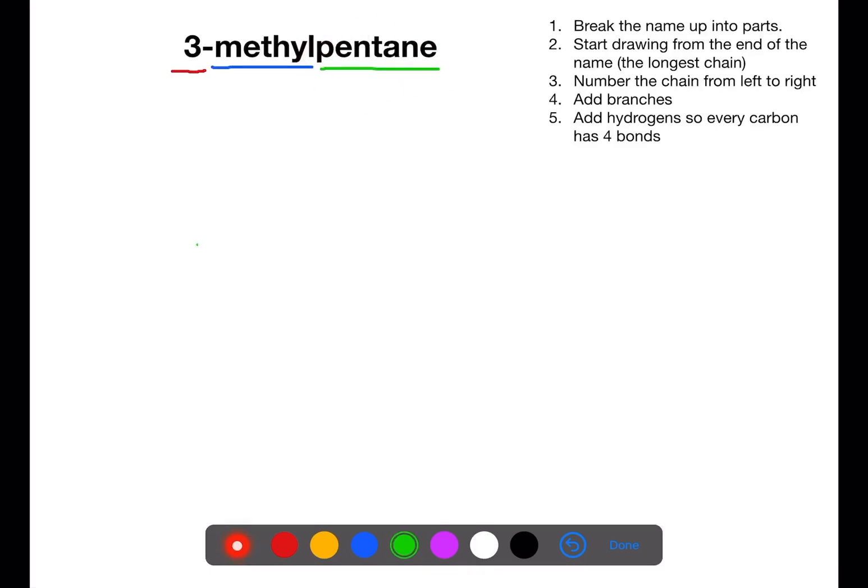We have pentane here, so if this was on its own it would just be five carbons. We've drawn out the five carbons. We're then going to number the chain from left to right.